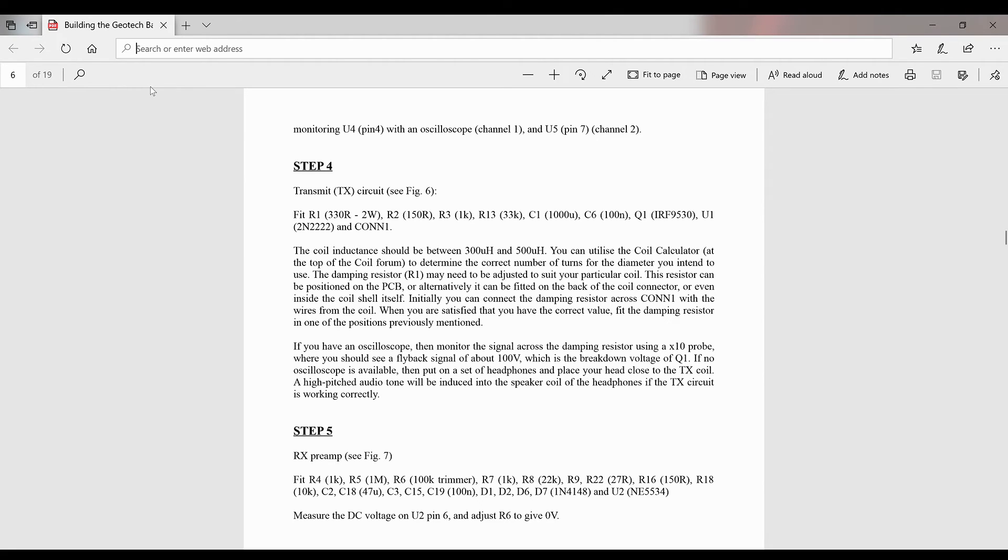All right ladies and gents, here we are on step four of the Barracuda pulse induction metal detector project: building the transmit circuit. Here's just a little shot of the build document. You can see here that for this step you already need to have made a coil, so the coil should typically be measured anywhere between 300 and 500 microhenries.